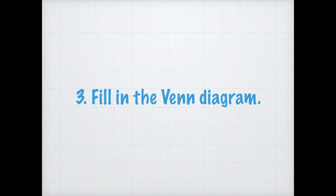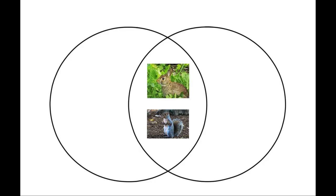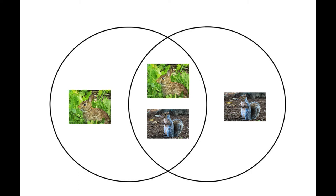Once you have figured out similarities and differences for your two organisms, then you would fill in your Venn diagram — that's the third step. In the center where the two circles overlap, you'd write down all of the similarities, and where the circles don't overlap, that's where you would write the differences.